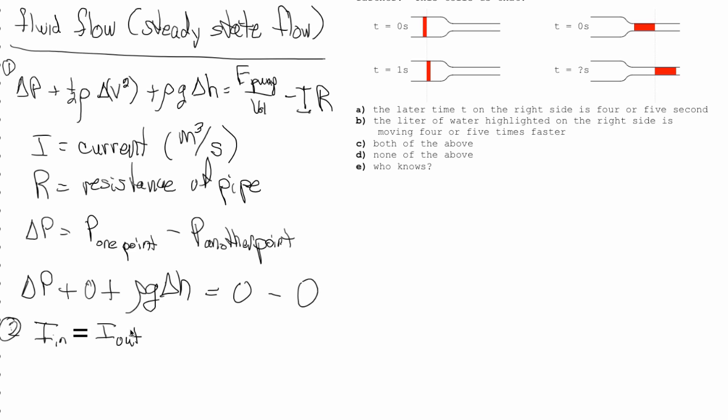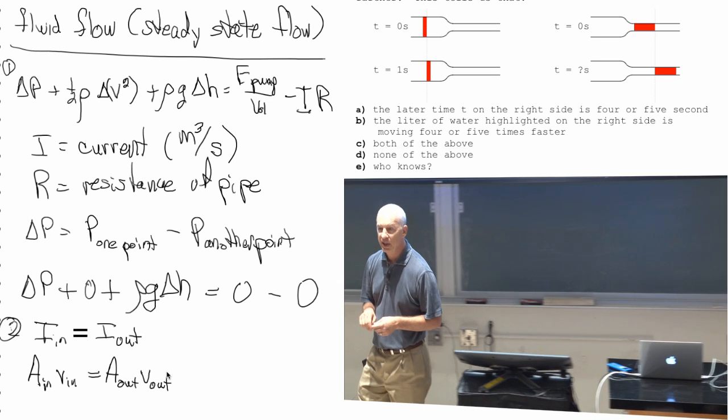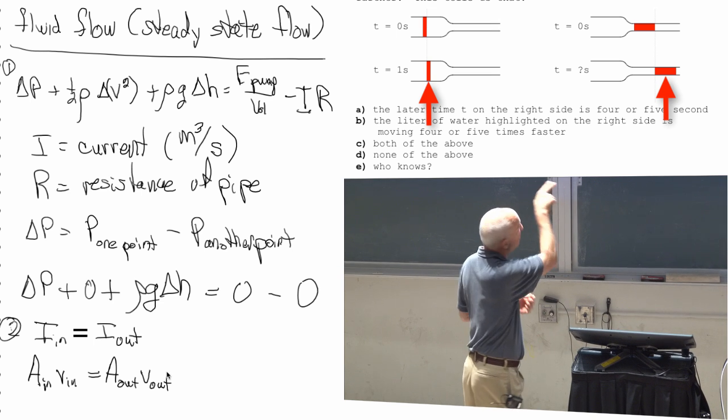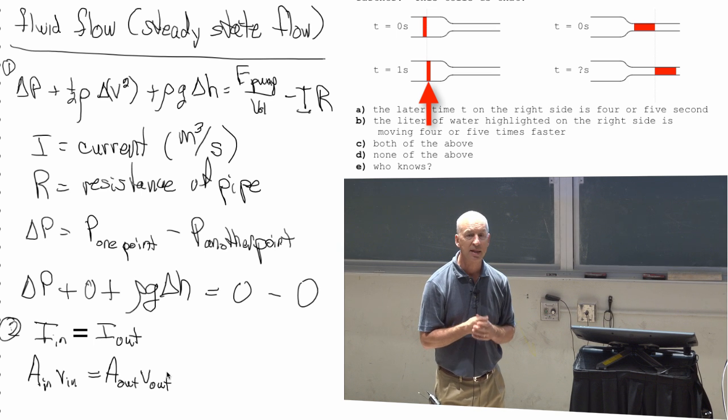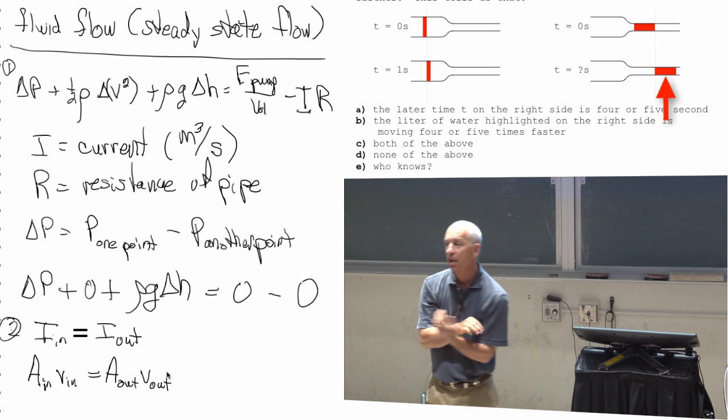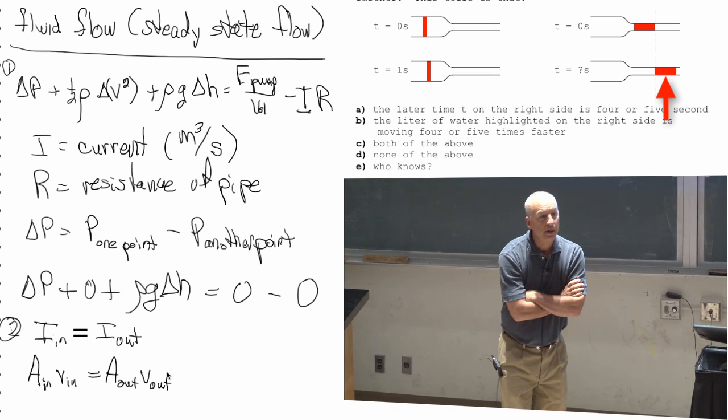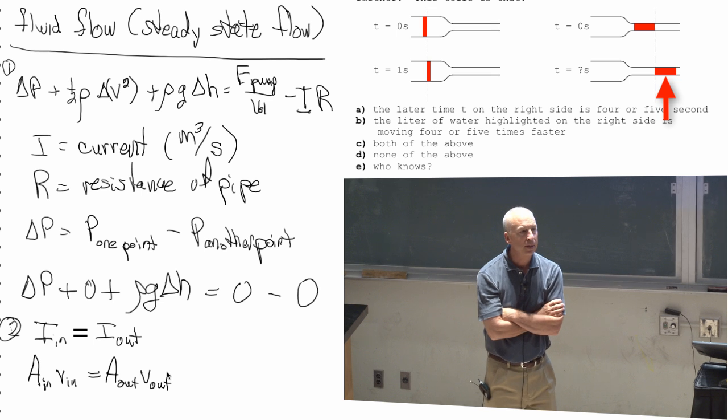the current, the water that flows into something every second, has got to be the same as the water that flows out. And you can check that the units work. You can also check this picture and see that it makes sense. That the current is the cross sectional area times the speed. If the current is going to be the same at those two places, on the left, the cross sectional area is big, so the speed's going to be small. On the right, the cross sectional area is small, and so the speed of the fluid's going to be big. Because the current is the same in both of them.